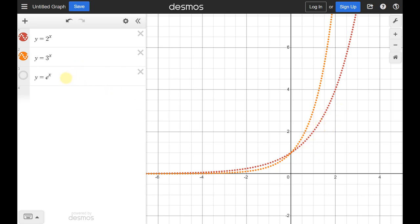So e to the x, remember e to the x was 2.71. So e really falls between 2 and 3, and it's a little closer to 3. So now I want you to see in the black line, what is e to the x?